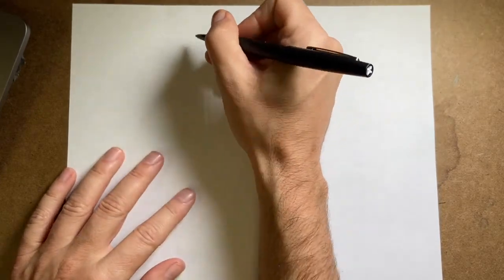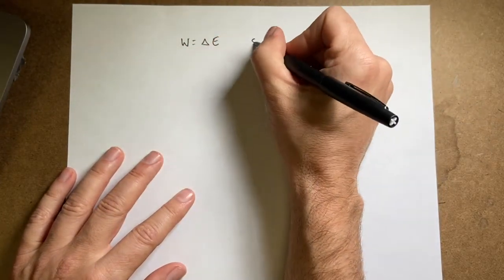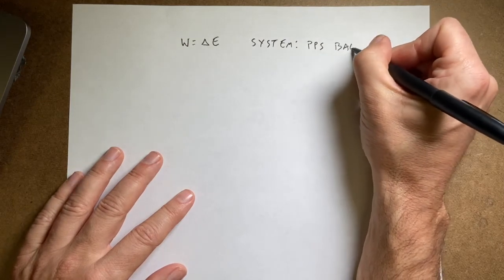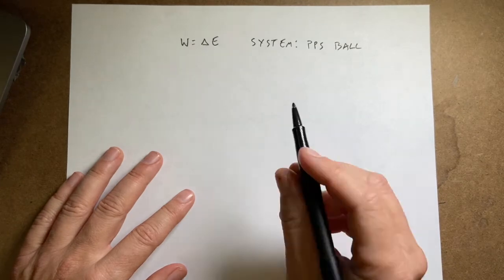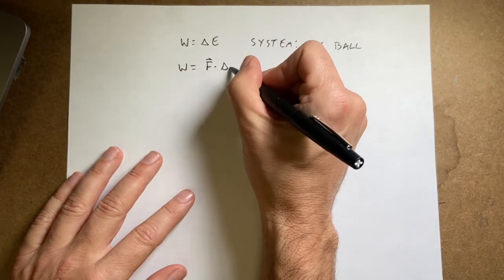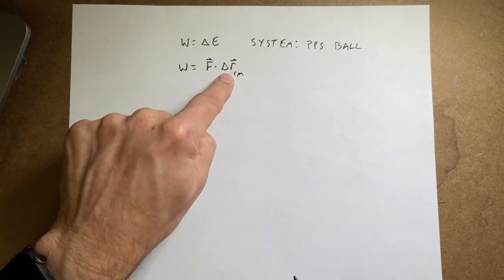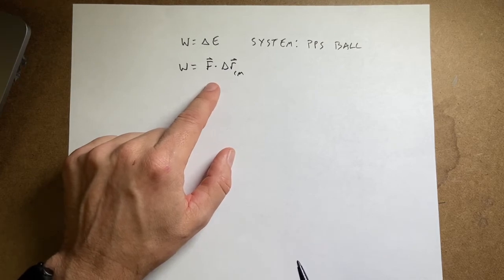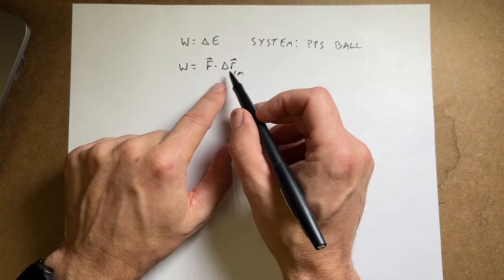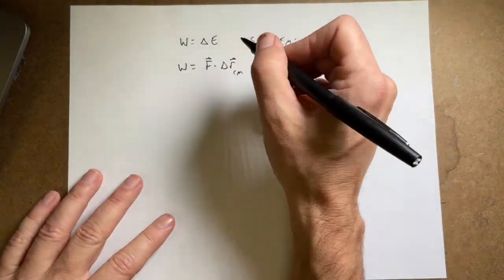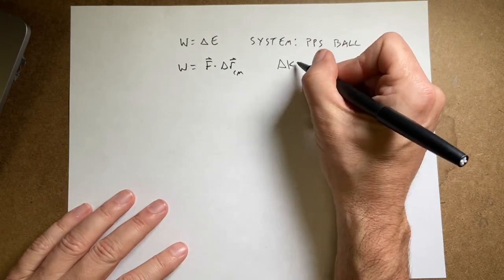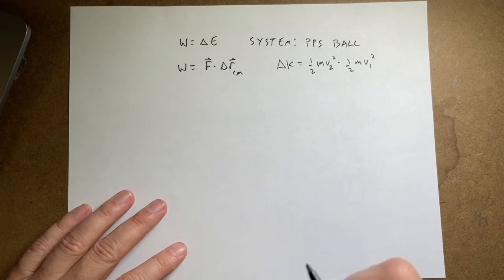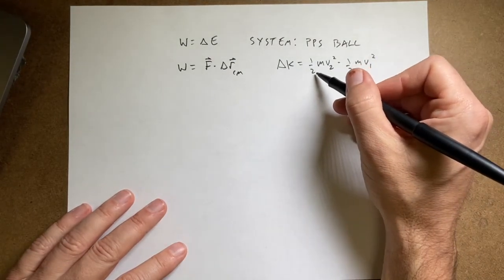So the work energy principle says the work is equal to the change in energy. And I need to pick my system. In this case, let's pick the point particle system of the ball. This says I'm going to treat the ball as a point. And I'm going to calculate the work as F dot delta r center of mass. So however far the center of the mass of the ball moves will be the work done. And I have to do that because in this case, the wall actually doesn't do work on the ball, right? The wall doesn't do any work on the ball because the wall doesn't move. But if I use the point particle system, then I can calculate the work even though it's kind of cheating. It actually works out. And in this case, for my system, the only kind of energy I'm going to have is a change in kinetic energy, which is one half mv2 squared minus one half mv1 squared. And of course, in this case, the final kinetic energy is zero because it stops.